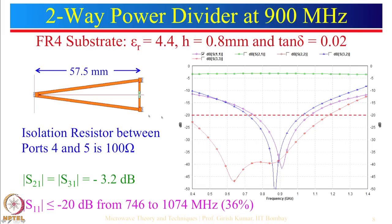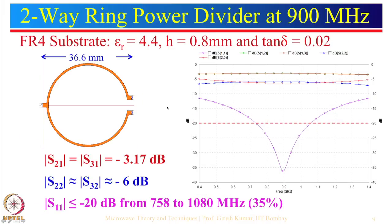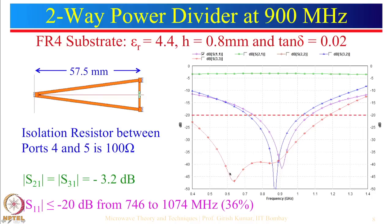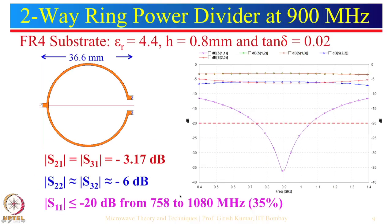The layout of the microstrip lines is very important. The previous layout used a straight line. If we use a different layout — a circular ring with a portion removed — and the ring length is still lambda/4, the total length is reduced from 57.5 mm to 36.6 mm, giving a more compact design.